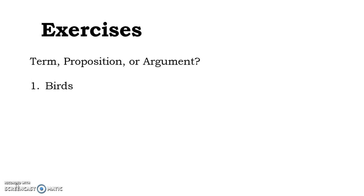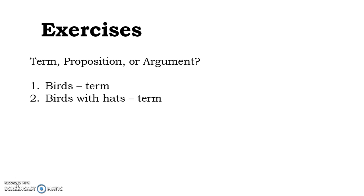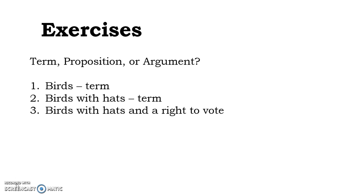The skill we want to know for this week's quiz is a very simple one: we want to be able to distinguish between terms, propositions, and arguments. So let's look at the word 'birds' — term, proposition, or argument? Pretty clearly, it's a term. What about 'birds with hats'? There I have more than one word, but 'with hats' is simply a modifier limiting which birds I'm talking about. This too is a term. I can extend a modifier with even more words and still be talking about just one thing, one category.